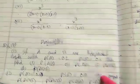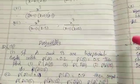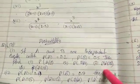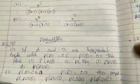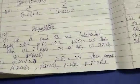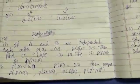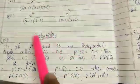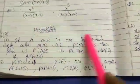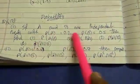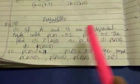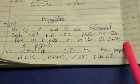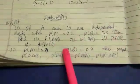7 plus 8 marks, which means 15 marks. If A and B are independent events, P(A) equals 0.2, P(B) — find P(A), P(A and B).